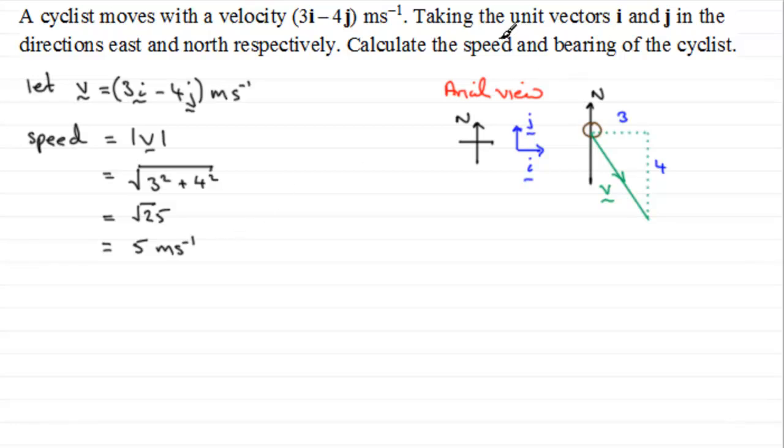Now we're also asked to find the bearing that the cyclist is going. And when it comes to working out a bearing remember we've got to face north, turn in a clockwise direction to the direction that the cyclist in this case is going. So in other words we're looking for this angle round here, that would be our bearing. And to do that what I'm going to do is work out what this acute angle is in here, we'll call it theta in this right angle triangle.